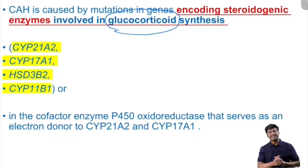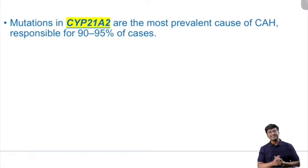The deficiency of these enzymes is mainly due to gene mutation. The genes which are mutated are CYP21A2, CYP17A1, HSD3B2, and CYP11B1. The most common gene mutated — an important multiple choice question point — is CYP21A2, which is responsible for 90 to 95 percent of cases.